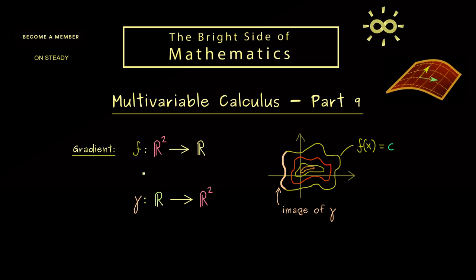In other words the composition of both maps is a constant function. More precisely f after gamma is always the value c. This holds no matter which point t from the domain of gamma we put in.